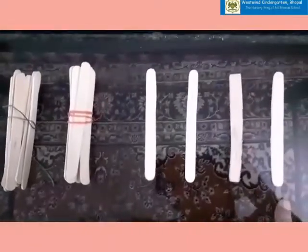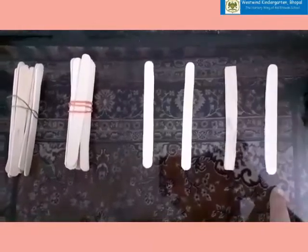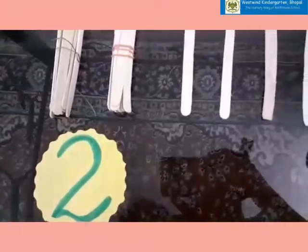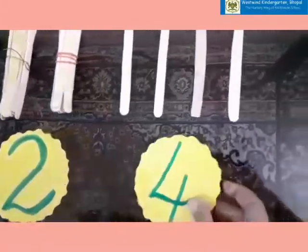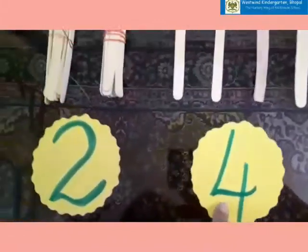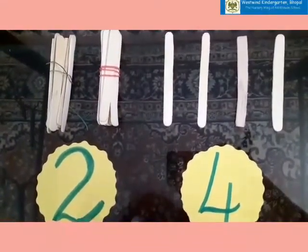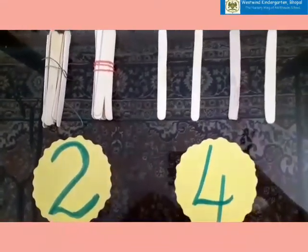So that means this is 2, 2, 20. And these are 4 ice cream sticks. 4. 2 bundles, 10, 10 bundles of 2 ice cream sticks, and 4 are the remaining extra ones.